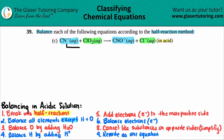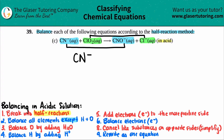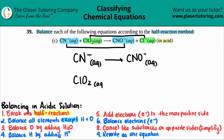So my two half reactions would be CN minus aqueous yields CNO minus aqueous, and ClO₂ aqueous yields Cl minus aqueous. Don't worry if one part has an oxygen and the other doesn't — step three is balance oxygen, so you can always add oxygens and hydrogens. Step one is done; we broke them up.